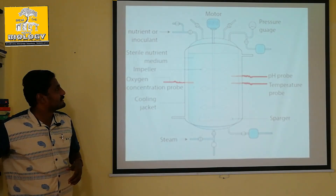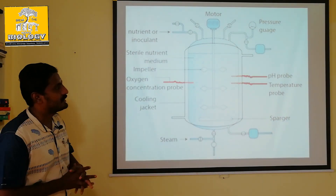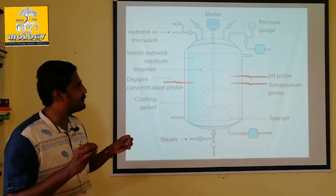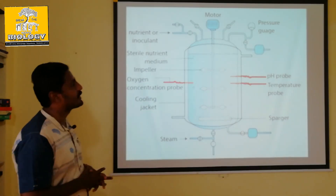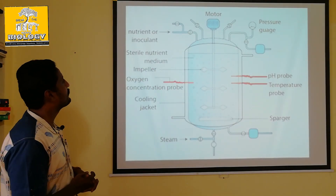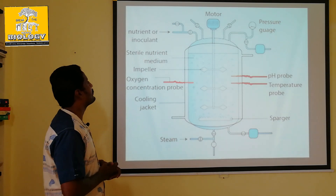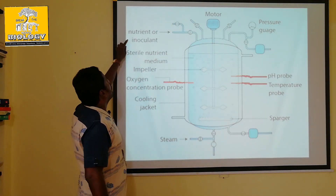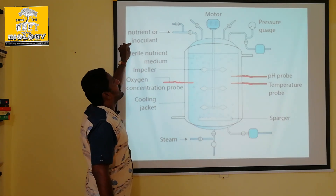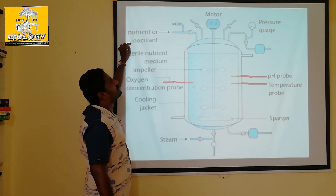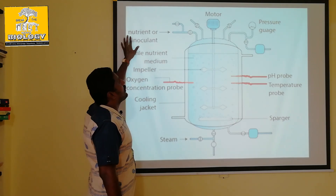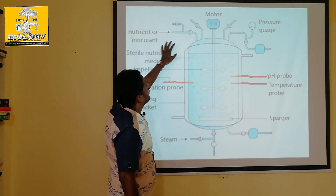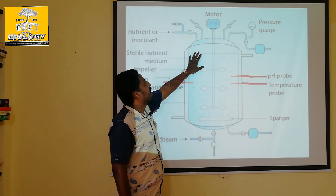Next, we have the bioreactor structure. We have the overall partition details. First, we have the nutrient or the inoculant. If you are aware of the nutrients, the inoculant is the same. This is the nutrient.